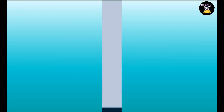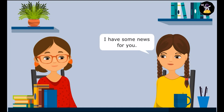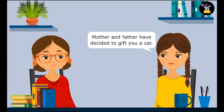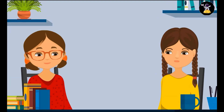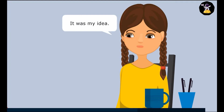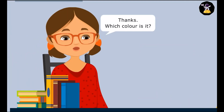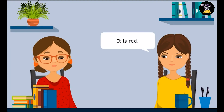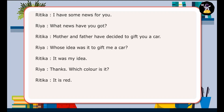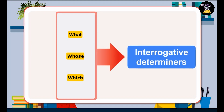Interrogative Determiners. I have some good news for you. What news have you got? Mother and father have decided to gift you a car. Whose idea was it to gift me a car? It was my idea. Thanks. Which colour is it? It is red. In the dialogues, the girls have used words that ask questions about the nouns that follow. The words what, whose, and which are examples of interrogative determiners.